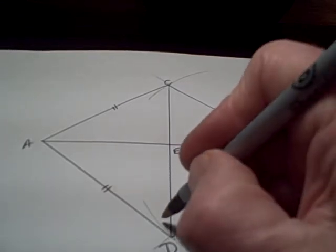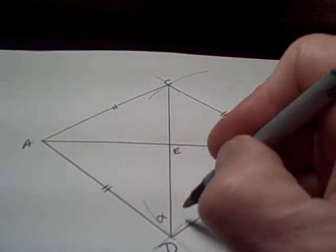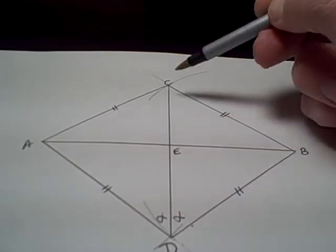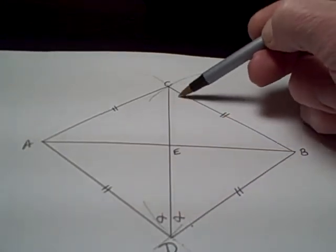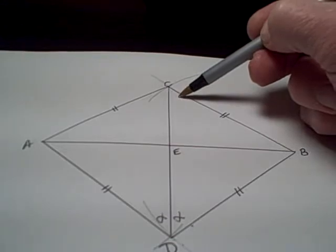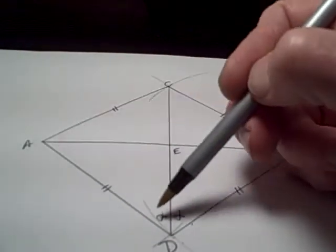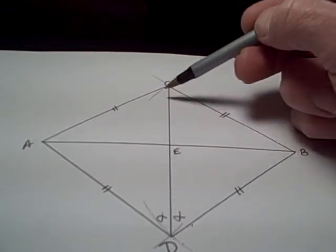That means that this angle down here would be the same as this angle, and it also means that this angle here is the same as this angle. But note also that these triangles are isosceles, and therefore their base angles are equal.